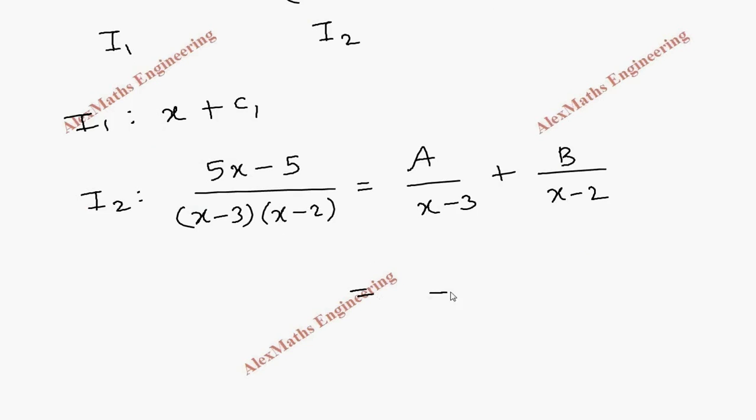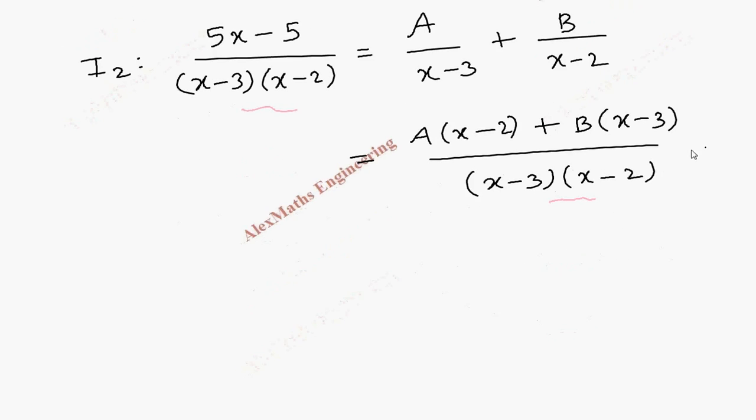Now let's take LCM which is (x - 3)(x - 2), so here A times (x - 2) plus B times (x - 3). So we get 5x - 5 equal to A times (x - 2) plus B times (x - 3).